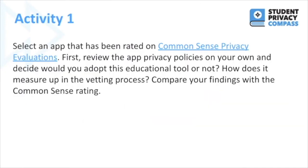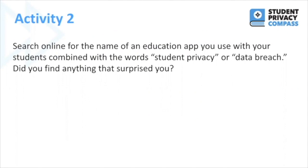For the first activity, select an app that's been rated on Common Sense Privacy Evaluations. First, review the privacy policies of that app on your own and decide: would you adopt this educational tool or not? How does it measure up in the vetting process? Then compare your findings with the Common Sense rating. For the second activity, search online for the name of an education app you use with your students, combined with the words "student privacy" or "data breach." Did you find anything that surprised you? Thank you for joining this training.